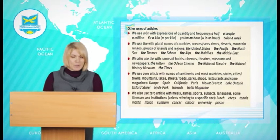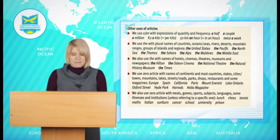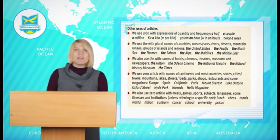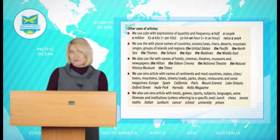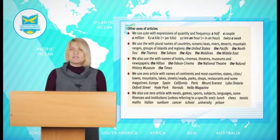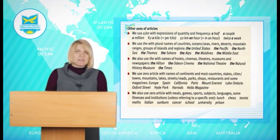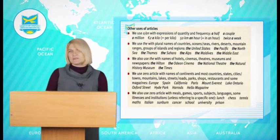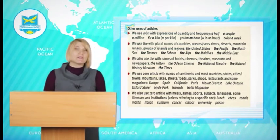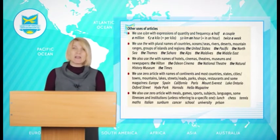We use 'the' with plural names of countries, oceans, seas, rivers, deserts, mountain regions, groups of islands and regions. For instance: the United States, the Pacific, the North Sea, the Thames, the Sahara, the Alps, etc. We also use 'the' with names of hotels, cinemas, theatres, museums and newspapers — for instance: the Hilton, the Audion Cinema, the National Theatre, the Natural History Museum, the Times.